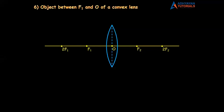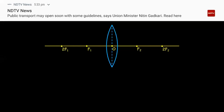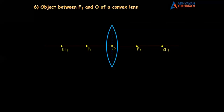At point O, draw a vertical dotted line three centimeters up and three centimeters down. Using a protractor, draw the lens. Moving ahead to the next step — object between F1 and O. Place the object between F1 and O, one centimeter in size, with an arrow mark at the top.